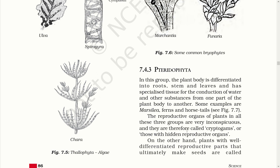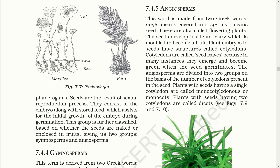The reproductive organs of plants in all these three groups are very inconspicuous. They are therefore called Cryptogames, or those with hidden reproductive organs. On the other hand, plants with well-differentiated reproductive parts that ultimately produce seeds are called Phanerogames. Seeds are the result of the sexual reproduction process. They consist of the embryo along with stored food, which assists the initial growth of the embryo during germination.